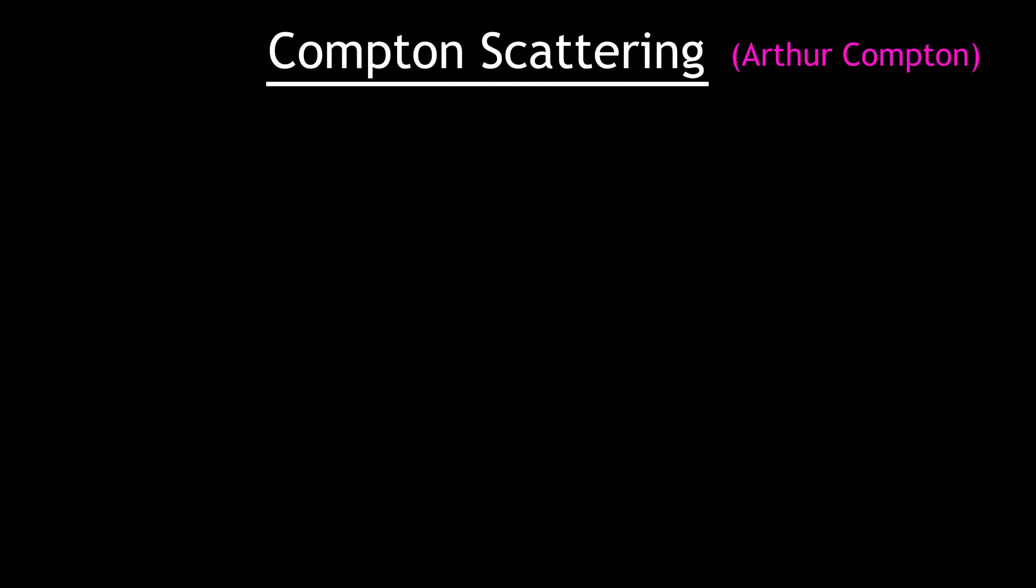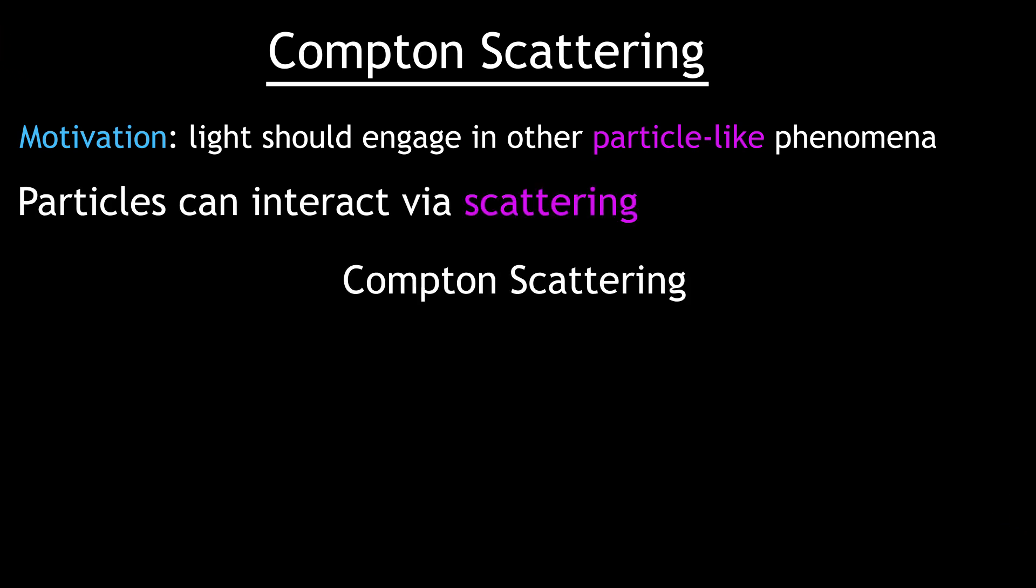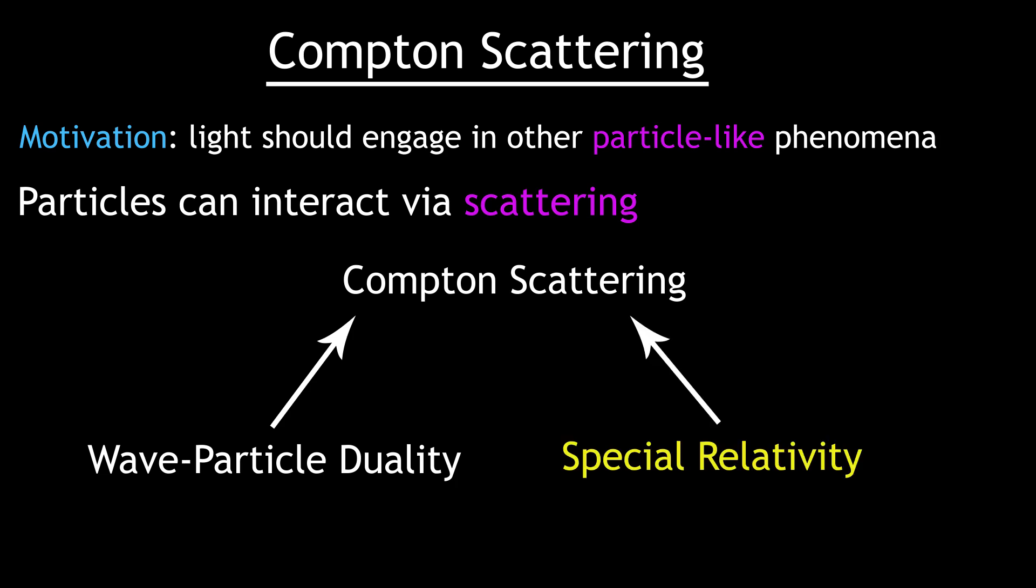Another significant phenomenon is Compton scattering, named after Arthur Compton. If light really does behave like a particle, then surely it should engage in some other particle-like phenomena. One of the simplest ways two particles can interact with each other is by colliding and bouncing off of each other, a process physicists call scattering. Compton scattering is one such process that needs both wave-particle duality and special relativity to explain it.